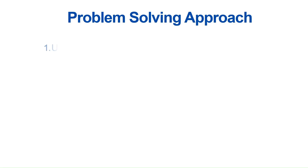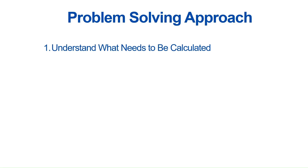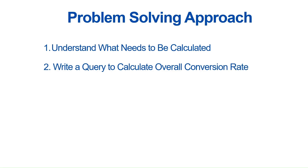Now let's discuss the problem-solving approach. We need to calculate: first, the overall conversion rate; second, the conversion rate per variant for groups A and B; and third, return only the users where the variant conversion rate is greater than the overall conversion rate.